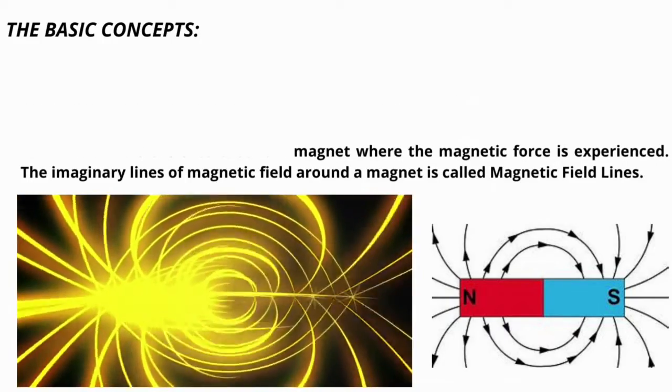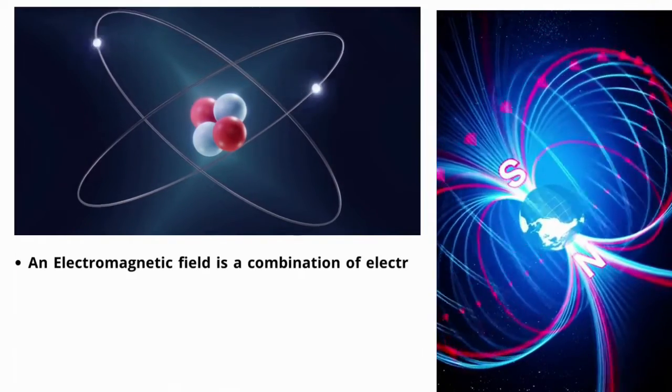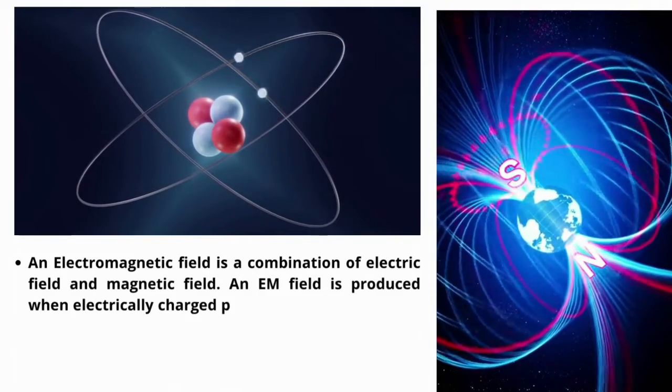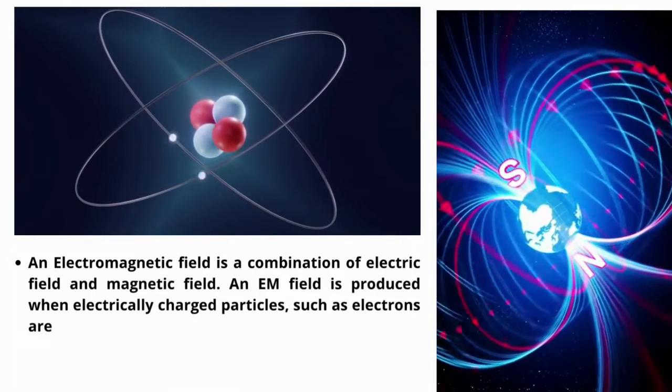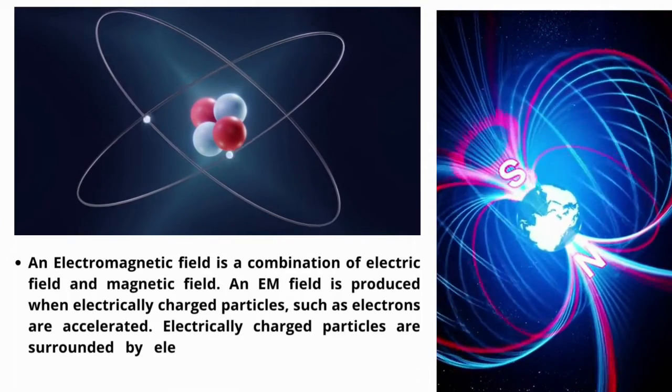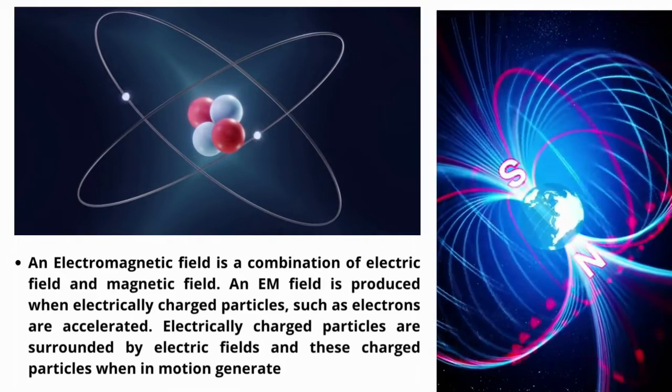An electromagnetic field is a combination of electric field and magnetic field. This field produced when electrically charged particles such as electrons are accelerated. Electrically charged particles are surrounded by electric fields and these charged particles, when in motion, generate magnetic field.